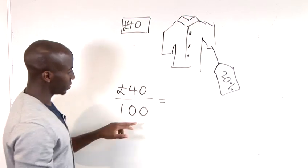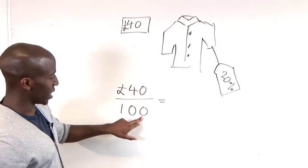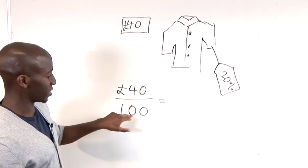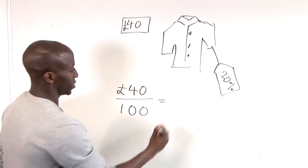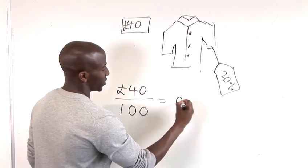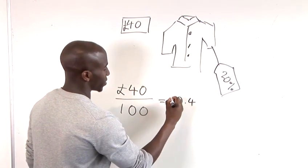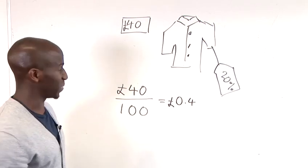Now that just means that we have to, as many zeros we find in the denominator, we jump to the left. So, one, two. So, we've got 0.4 pounds. This is just basically 40 tenths.